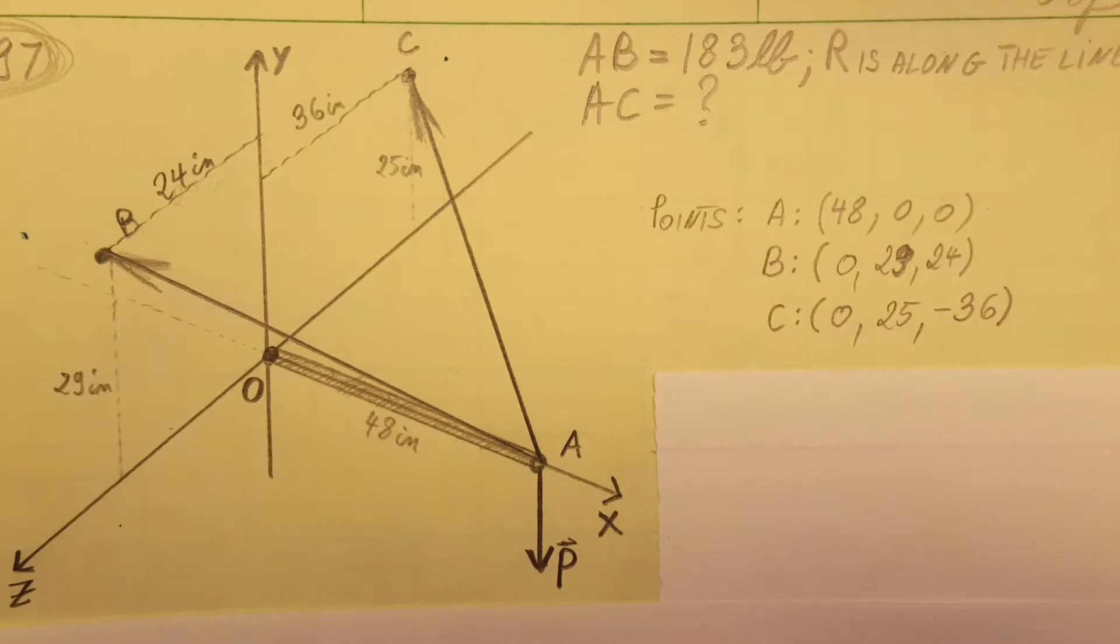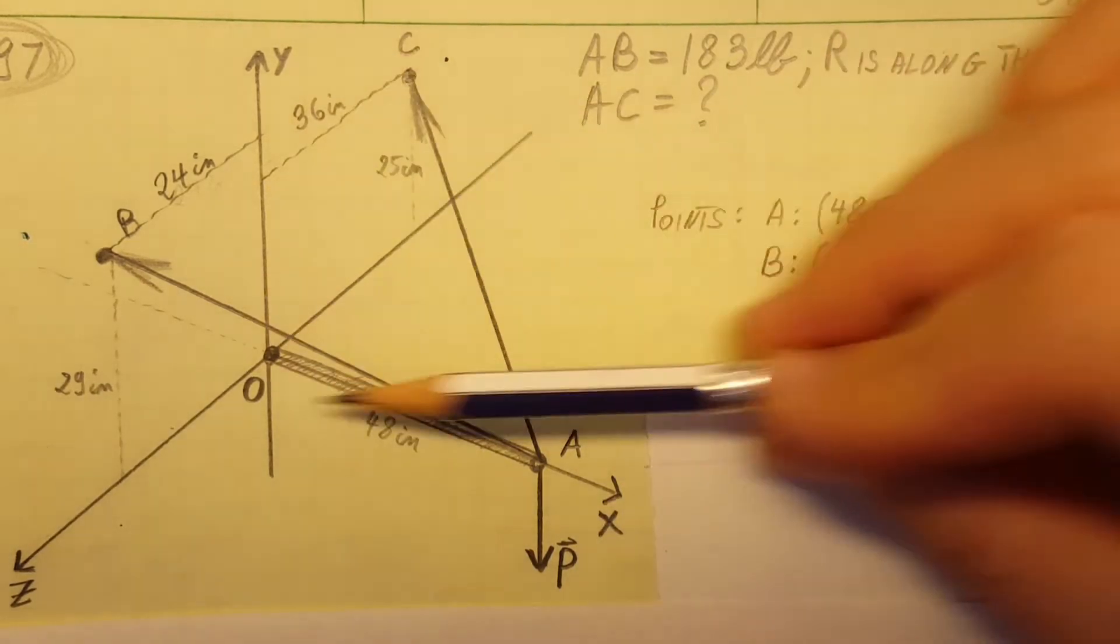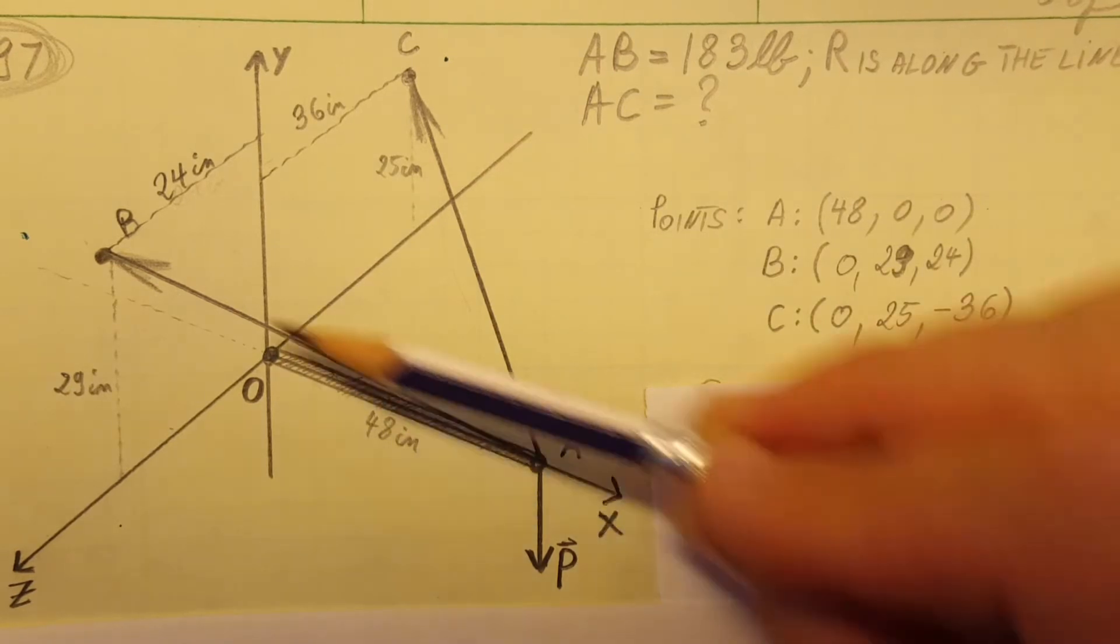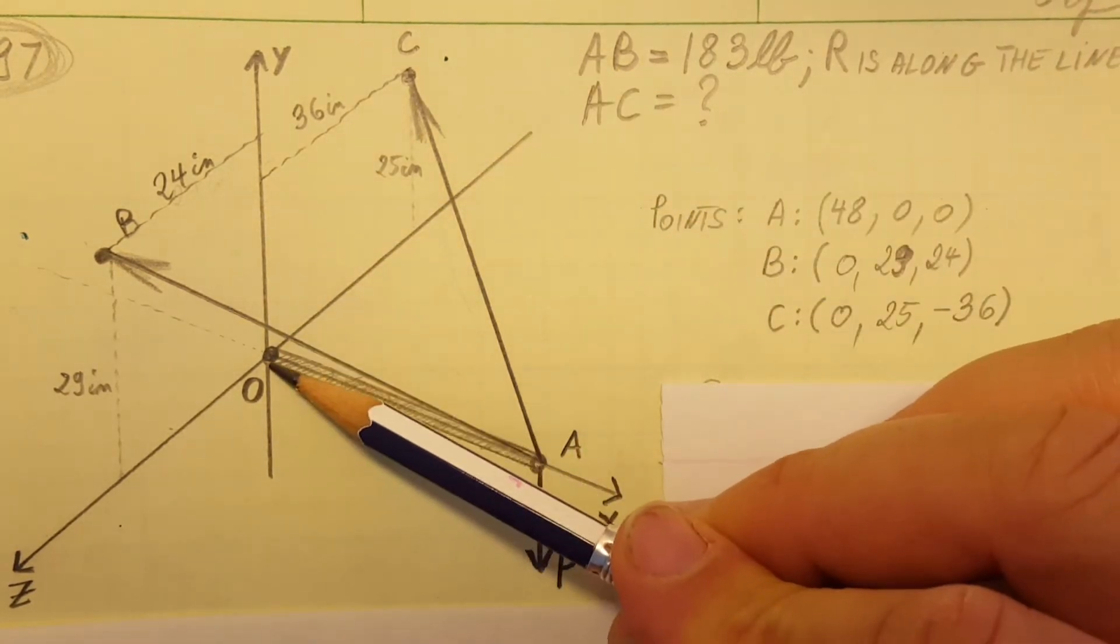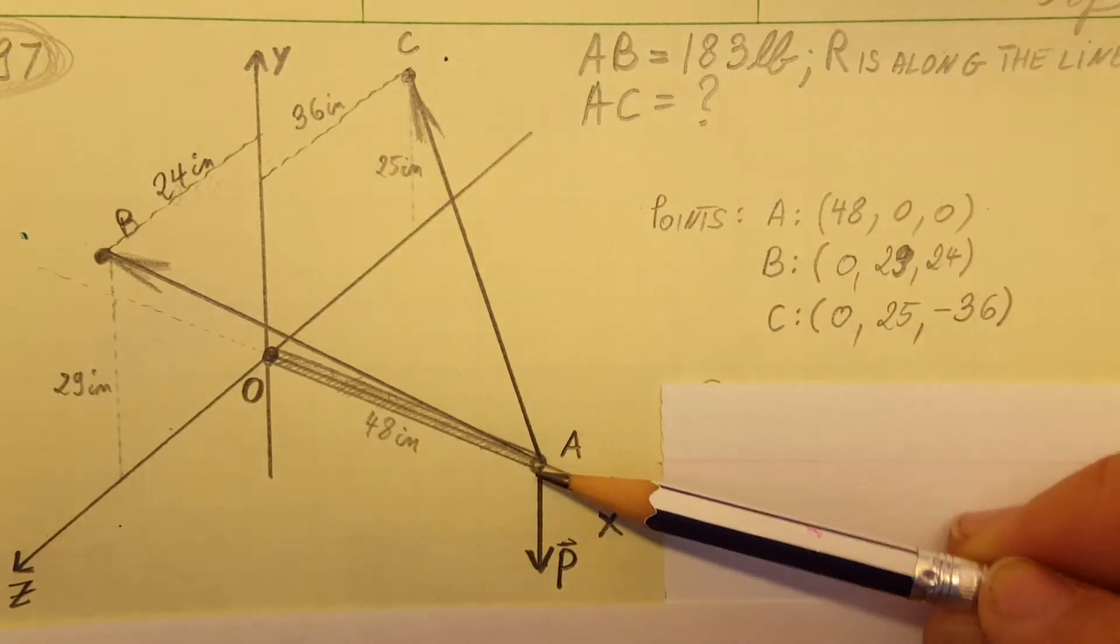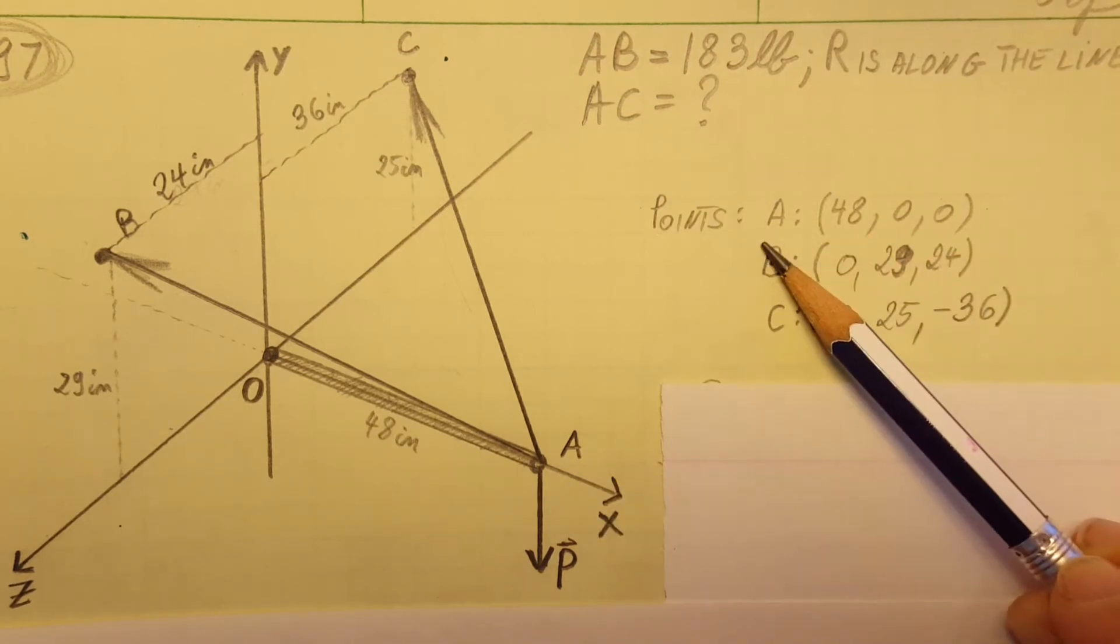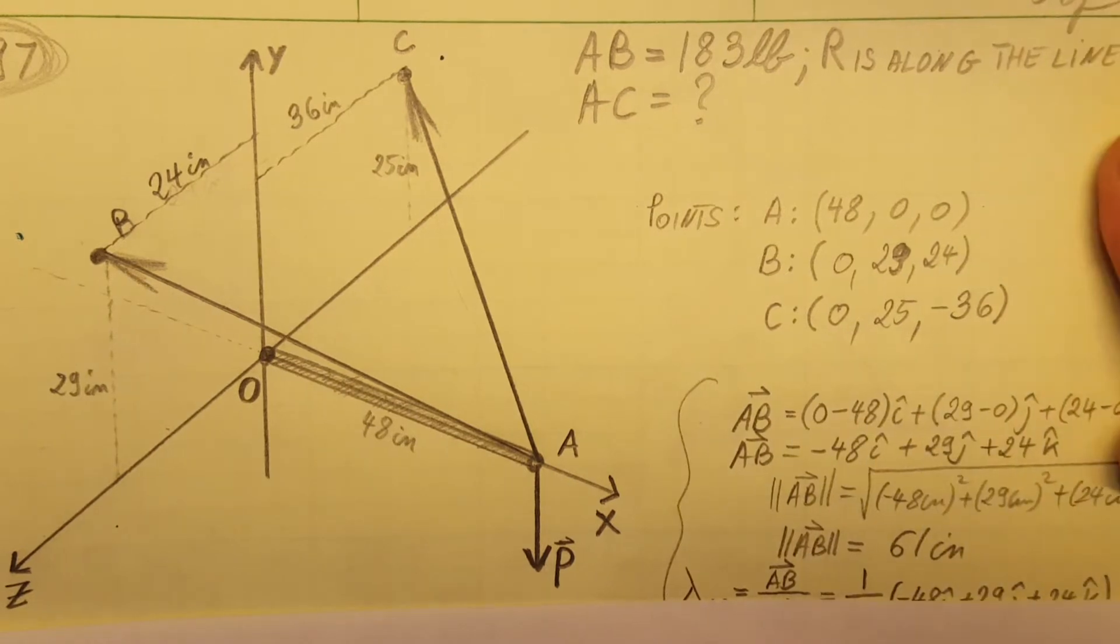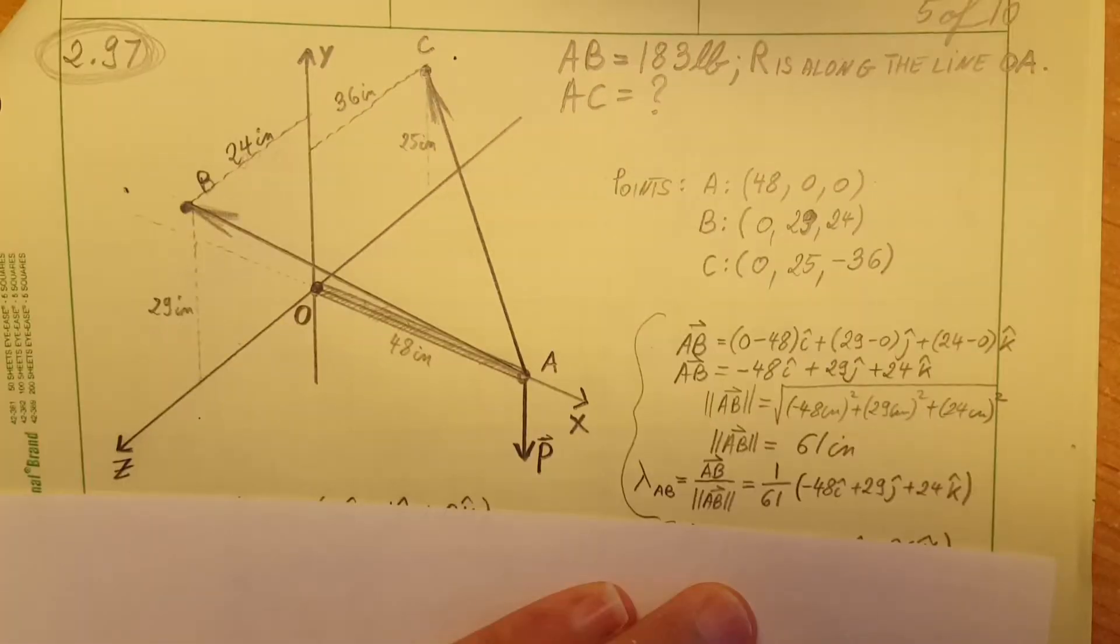From the diagram that we are given, we're gonna go ahead and find the coordinates of points A, B, and C. The coordinate of O we know is (0, 0, 0). We calculate or actually just read it off of the graph: point A is (48, 0, 0), B is (0, 29, 24), C is (0, 25, -36). These are all given. From here we're gonna start our work by calculating unit vectors.